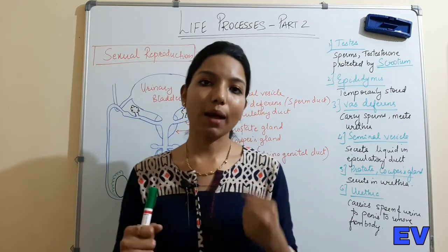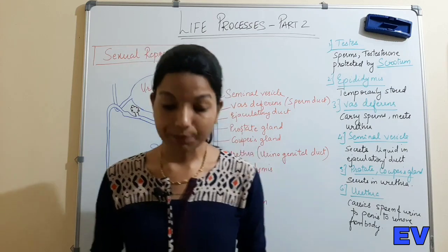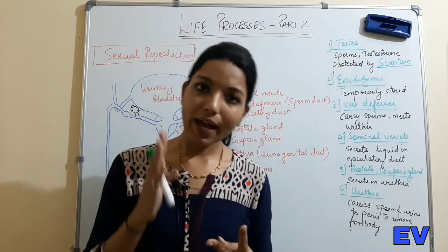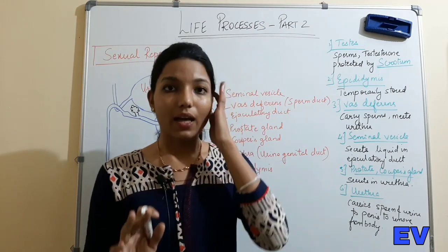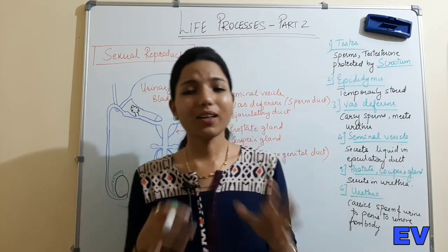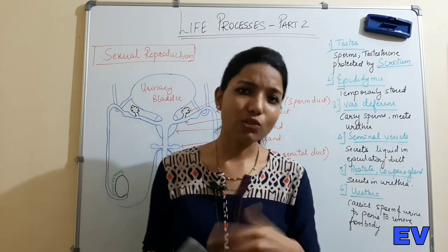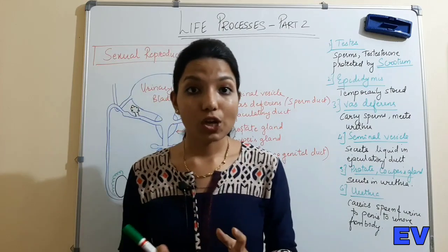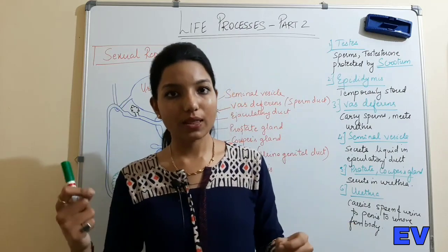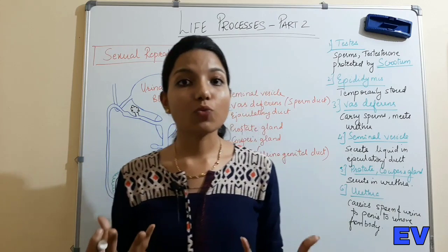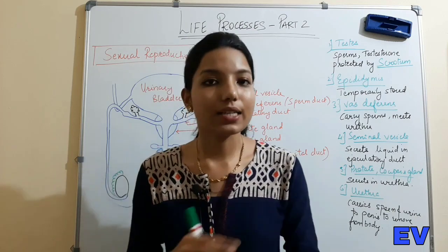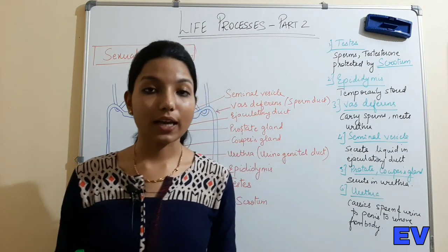In human beings, there are two gametes - one male gamete and one female gamete. The male gamete is called sperm and the female gamete is called egg or ovum. Gamete formation happens through meiosis. In males, sperms are formed and in females, ovum is formed. These cells are called germ cells, sex cells, gametes, or reproductive cells.